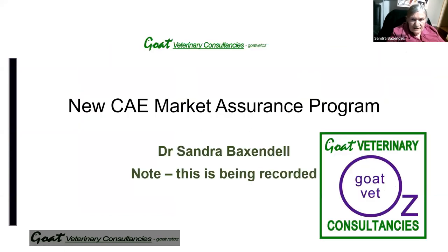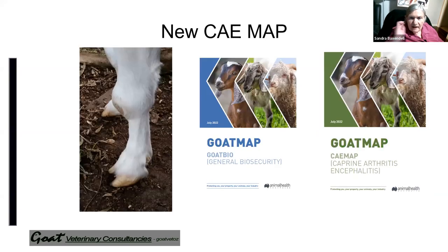So this is being recorded and hopefully it will be made available to anyone that wants to watch it through my YouTube channel. So let's make a start. For the new CAE Market Assurance Program, you actually have to do the general biosecurity module first and then you do the CAE MAP as a second activity.